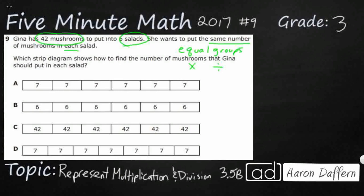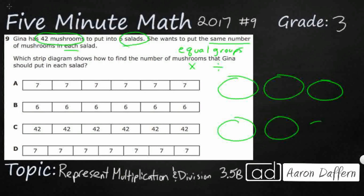So, Gina has 42 mushrooms to put into 6 salads. I'm just going to draw some salad bowls — I'll do 2 rows of 3. So here we go. I've got my 6 salads.